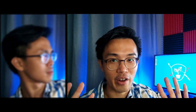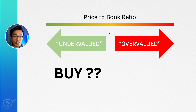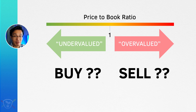Alright, that's it for today's video. Do like, comment, subscribe. Whoa, whoa, hold on. Does this mean that I can go to the market today, calculate all the PB ratios, buy everything with a PB ratio under one — which is undervalued — and sell everything with a PB ratio higher than one — which is overvalued? Is that the secret to investing?